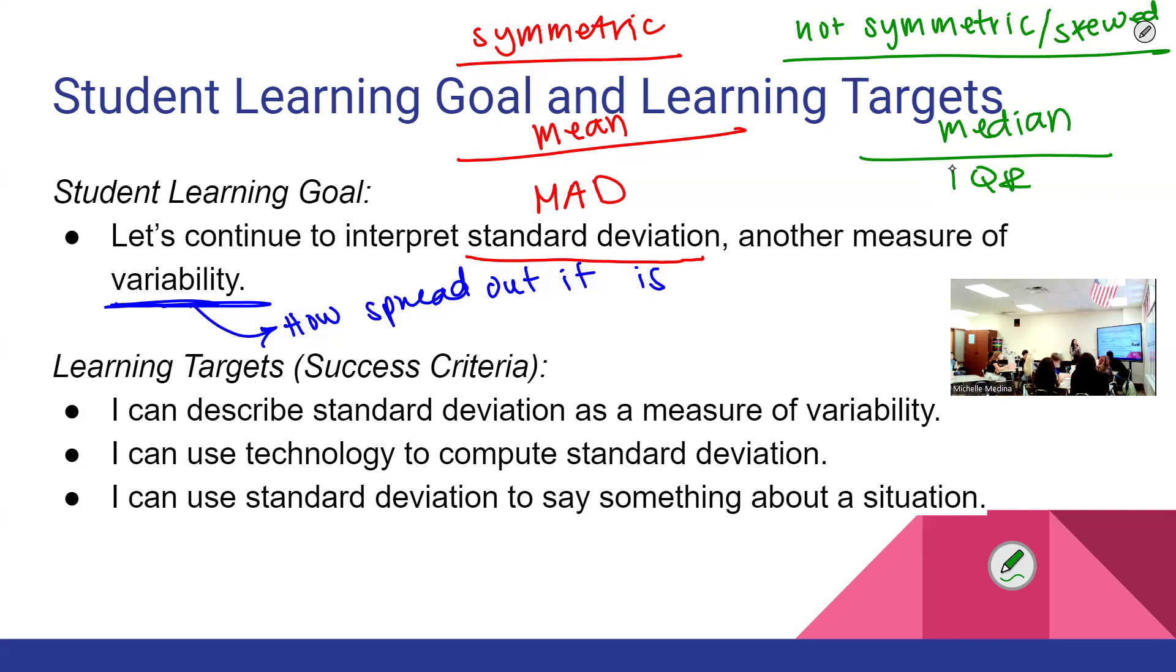That's the gist of the lesson today. A higher standard deviation would mean it's more spread out. So you can use technology to compute standard deviation. Know that you can only see the data in the dot plot. On your test there will be histograms and box plots. You should be able to tell me whether or not a box plot is symmetric.